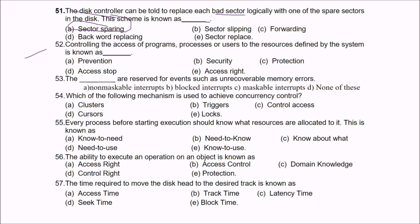Question 52: Controlling the access of programs, processes, or users to the resources defined by the system is known as protection. Protection defines who is going to use what.